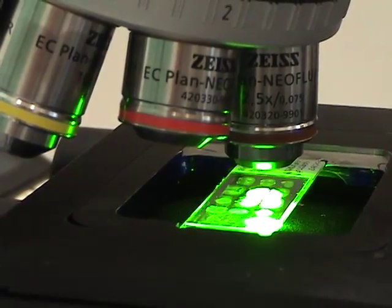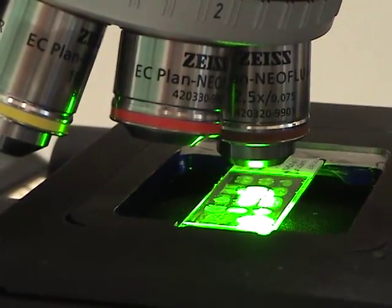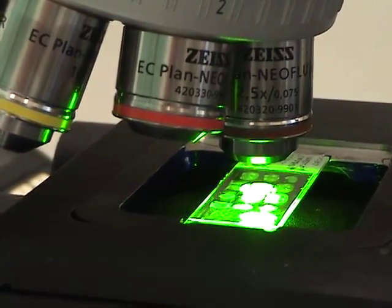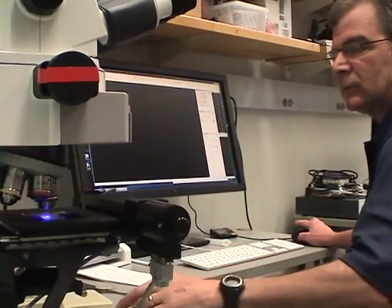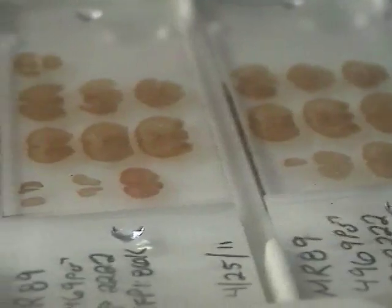Figuring out how all these connections lead to our thoughts and actions is a big job. Scientists who study the brain are called neuroscientists. Some neuroscientists study brains from mice and other animals, which give us clues about how the human brain works.